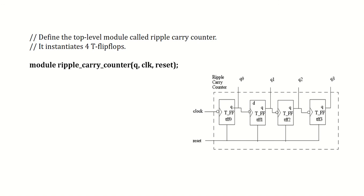Now let us write the Verilog code. The name of the module is ripple_carry_counter. Any Verilog code starts with the keyword module followed by the module name. We need to write the inputs and outputs of this counter — clock, reset, Q0, Q1, Q2, Q3 — so I am declaring it as Q, clock, reset.